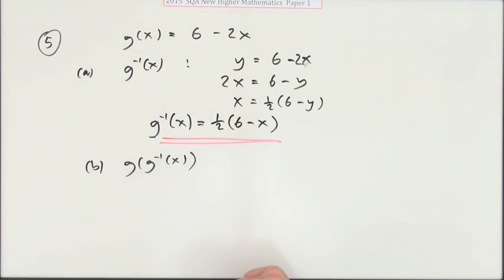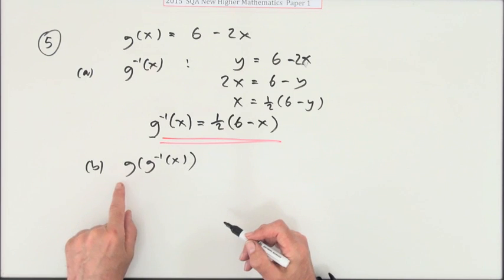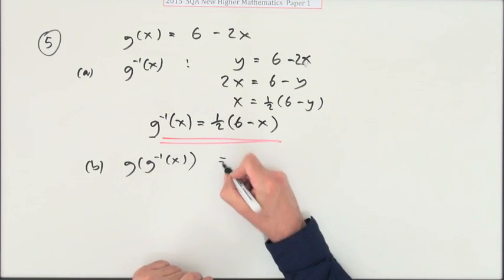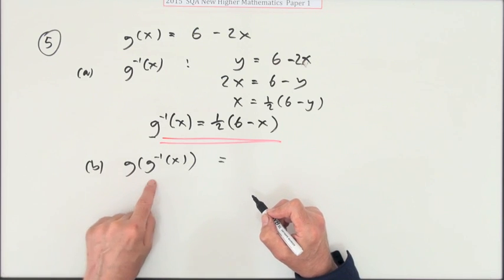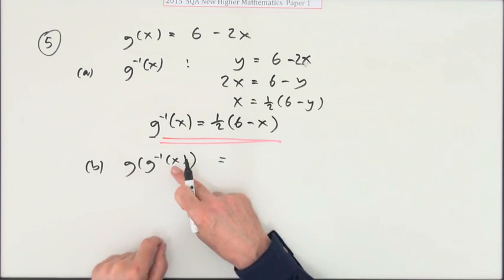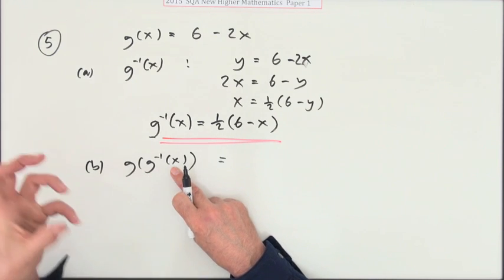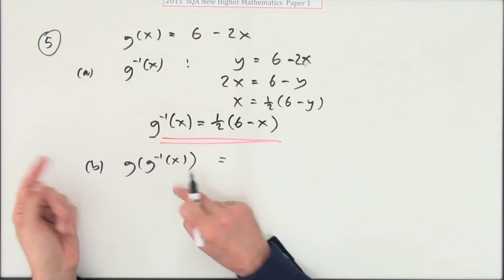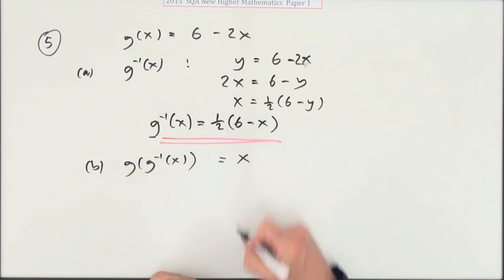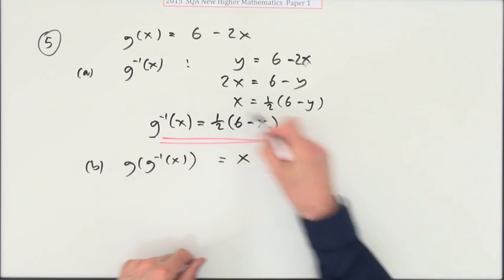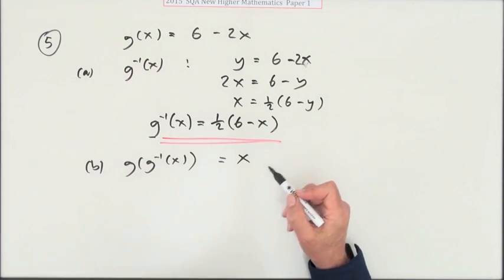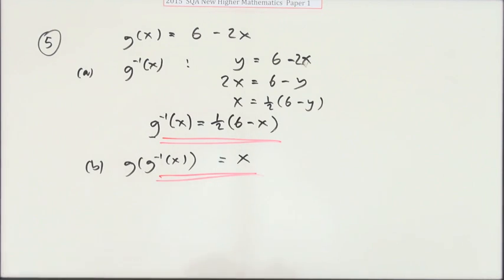Now part b simply says for one mark write down an expression for this. They're meant to undo each other—they're inverses. If you put in x, the inverse will give you some number; g will take that number and give you that x back again. It should just be x. You could test it yourself just by putting that through this, but that's the definition of the inverse.